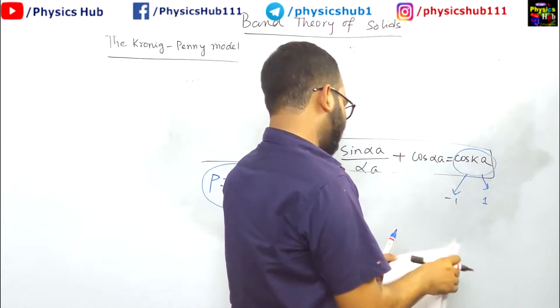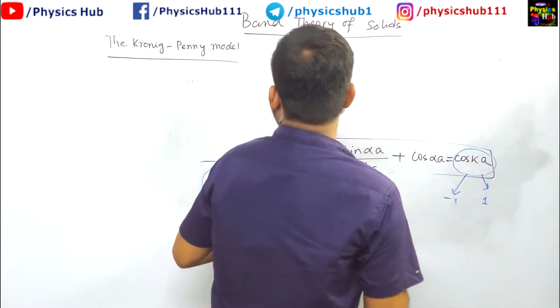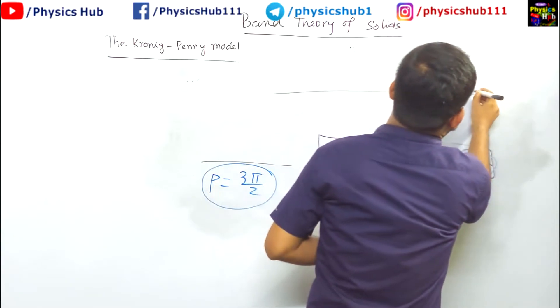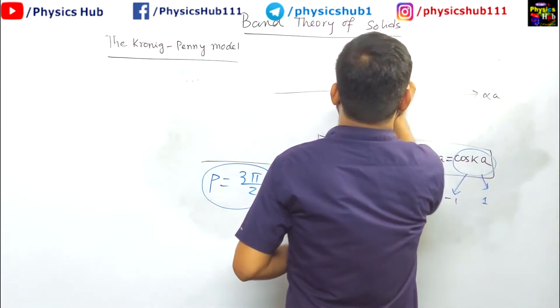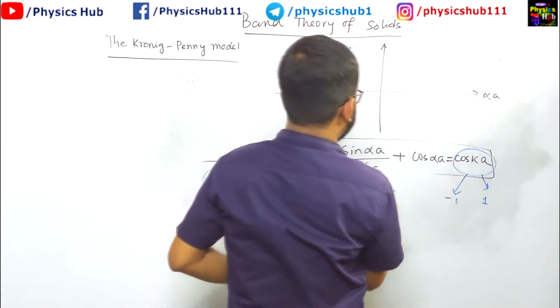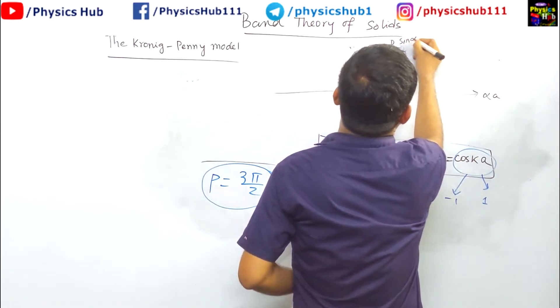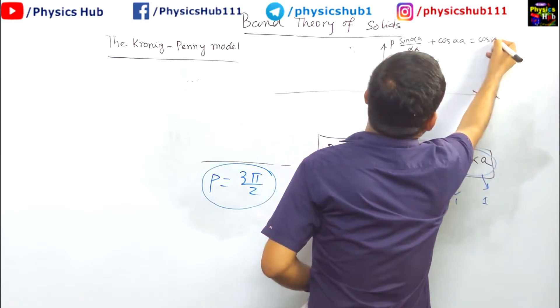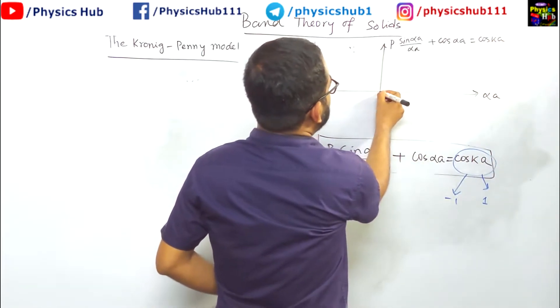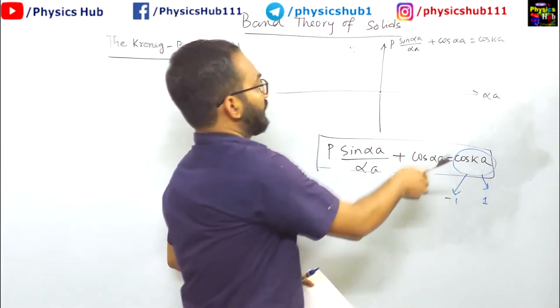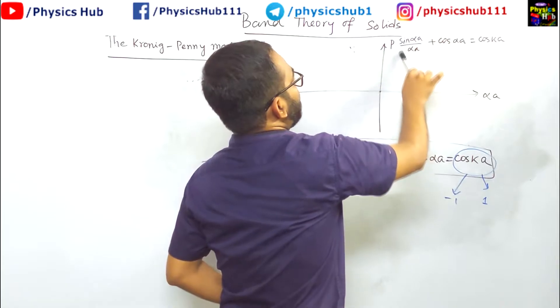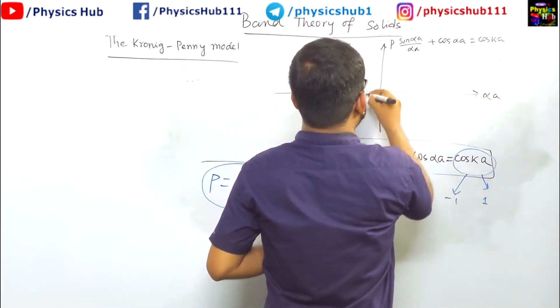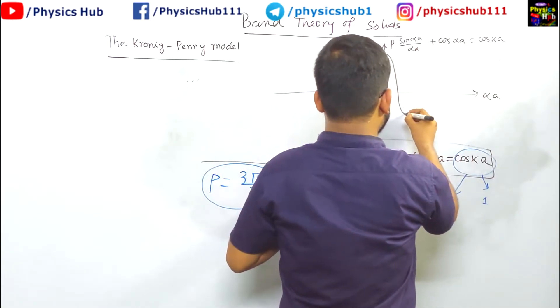Let us draw this. We are drawing it by taking p equals 3 pi by 2. The variable here is alpha a. This is the y axis and along the y axis we are plotting p sin alpha a by alpha a plus cos alpha a equals cos k. You see when alpha equals 0, obviously in the limit of alpha equals 0 this value will be maximum. You will get a curve like this.